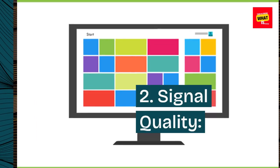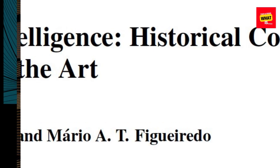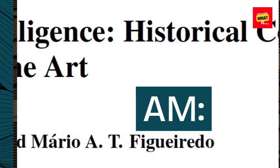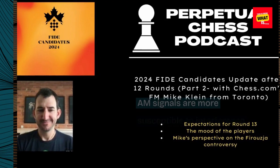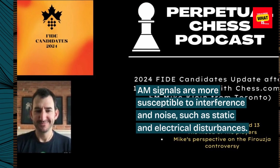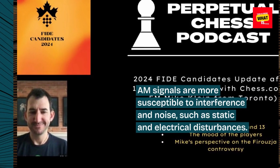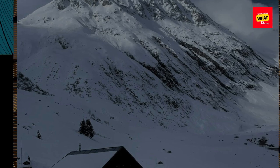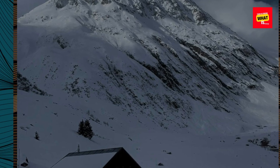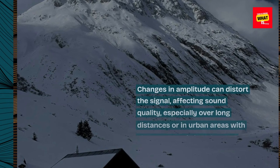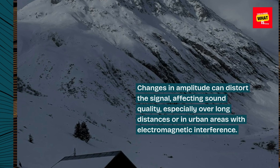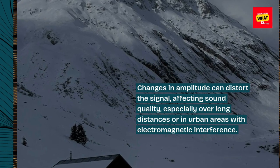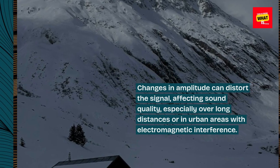2. Signal quality. AM signals are more susceptible to interference and noise, such as static and electrical disturbances. Changes in amplitude can distort the signal, affecting sound quality, especially over long distances or in urban areas with electromagnetic interference.